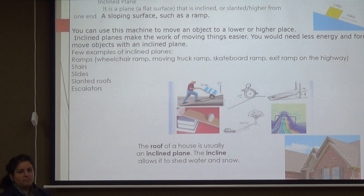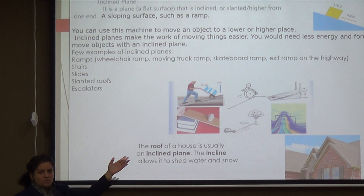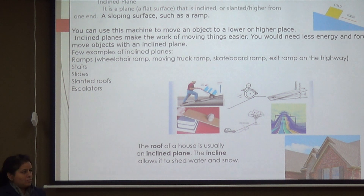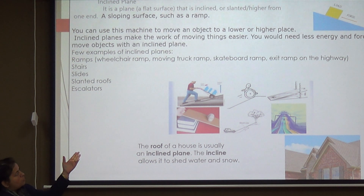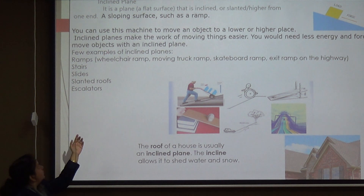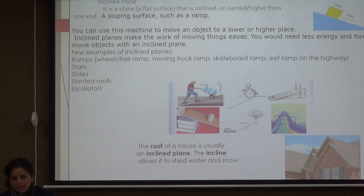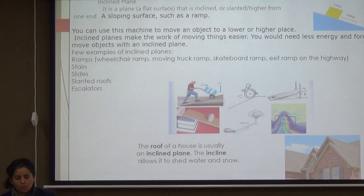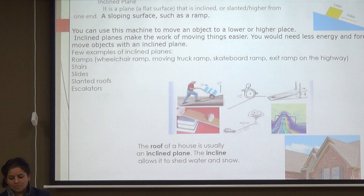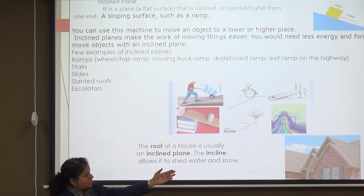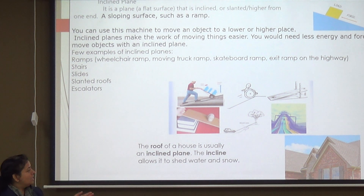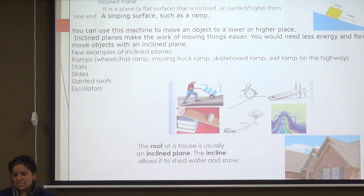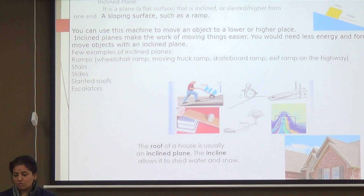Next we will look at the inclined plane, which is a very common simple machine we see often. A ramp is a very good example. We use this machine to move an object to a lower or higher place. Examples include staircases, slides that children enjoy in the park, and slanted roofs — if there were no slanted roofs, how would water and snow slide off them? So the inclined plane is a simple machine we use in our daily life.